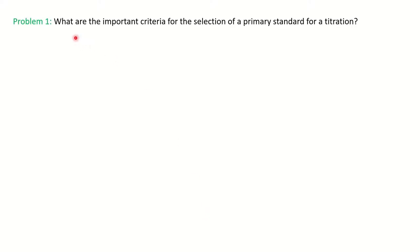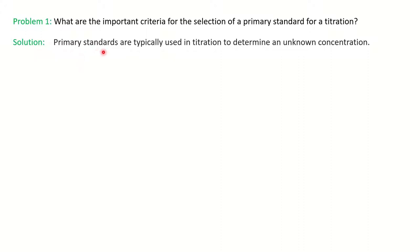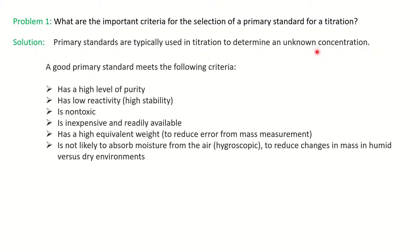Let's begin. We'll be solving some questions here. The very first question is: what are the important criteria for the selection of a primary standard for a titration? These questions are important for MSc chemistry students, especially first year, and you can use this information for competitive exams. Basically, primary standards are used to determine the unknown concentration of your analyte.